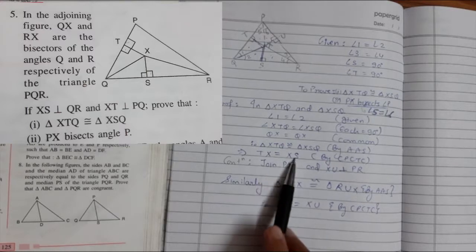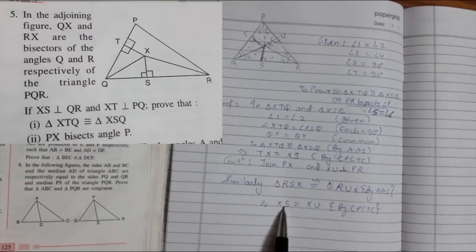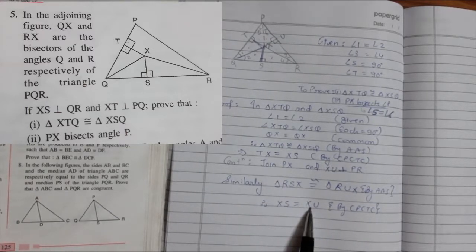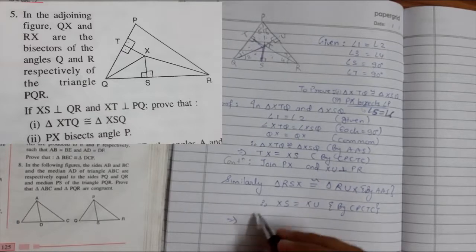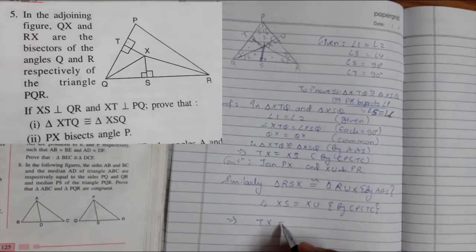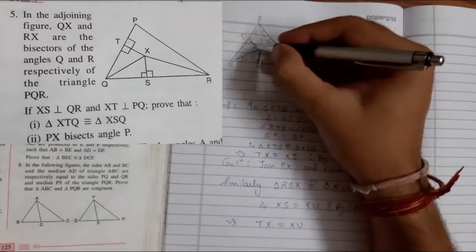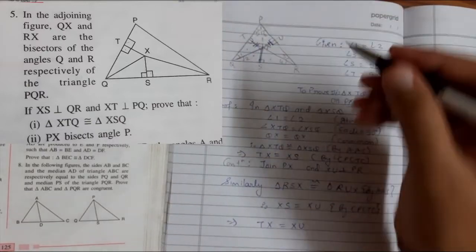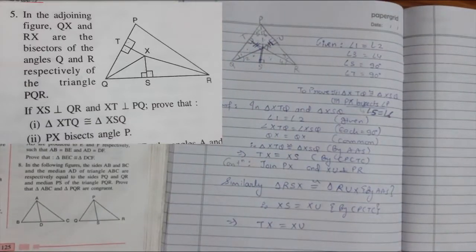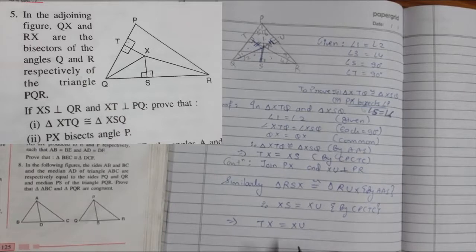See, XS equals to TX, XS equals to XU. So therefore TX equals to XU. So we got the third thing. These two are equal.